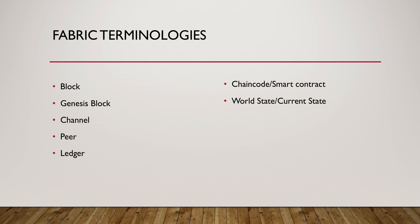World state, or current state, is part of the ledger and, as the name suggests, represents the latest values for all the keys stored in the transaction log. The benefit of maintaining a world state in Fabric as opposed to other blockchain models is that the chain code — that is, our business logic — can directly access the latest valid values without having to calculate them from the transaction log every single time. This has a huge impact on performance.